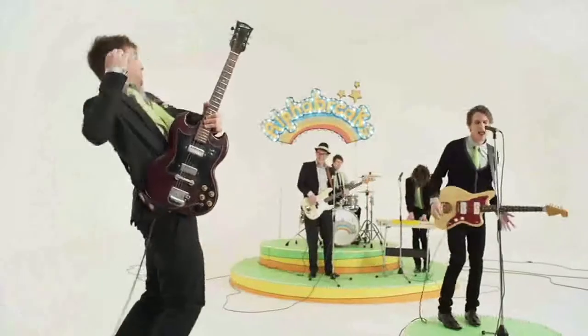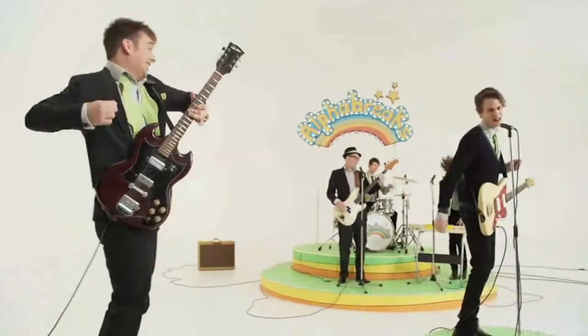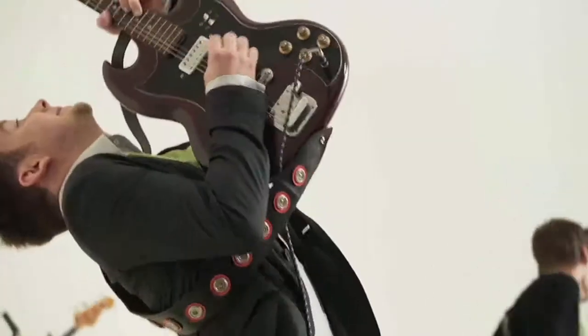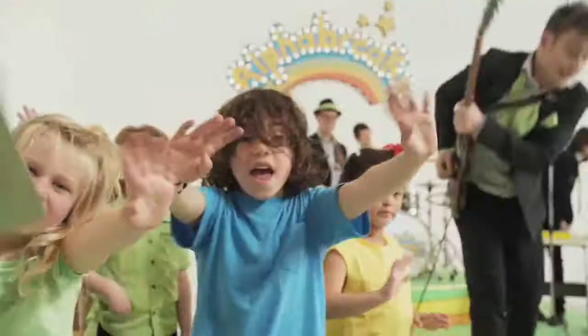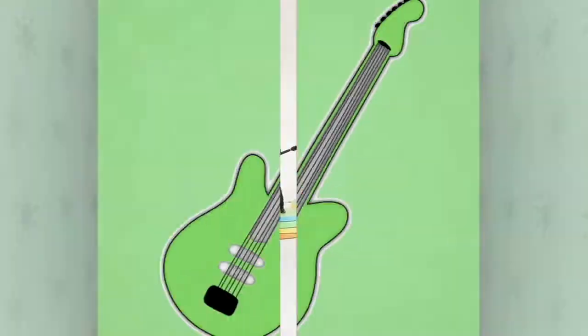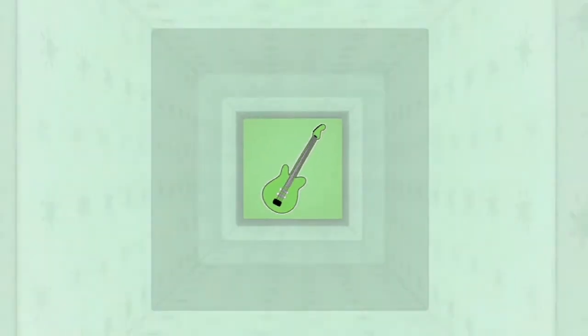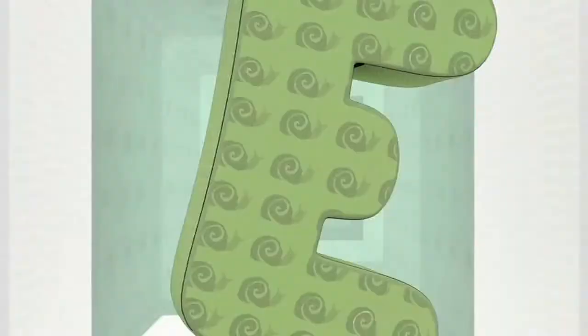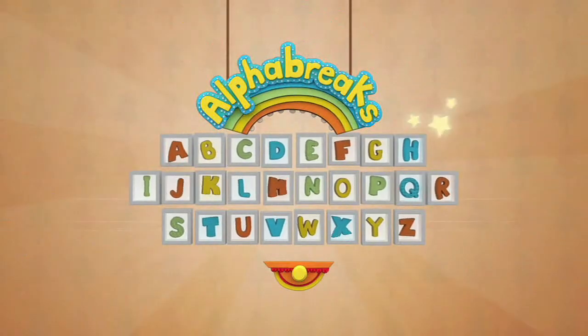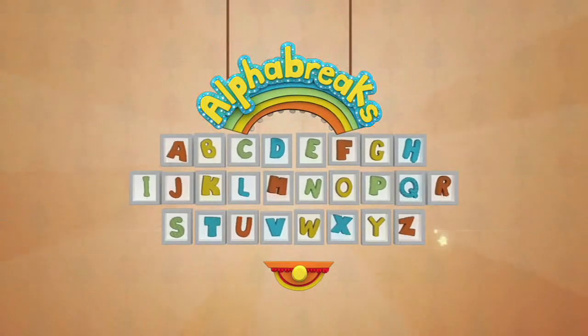E is for electric guitar. Let's hear it for Alphabrakes. It's the place to meet. Alphabrakes, where letters and instruments move to the beat. Alphabrakes.